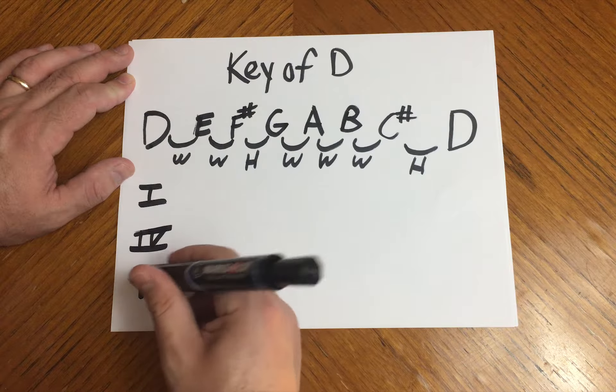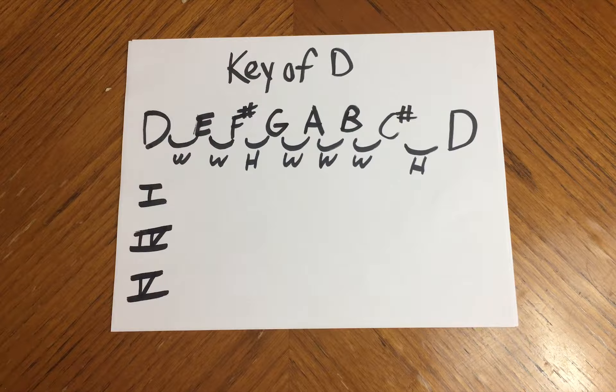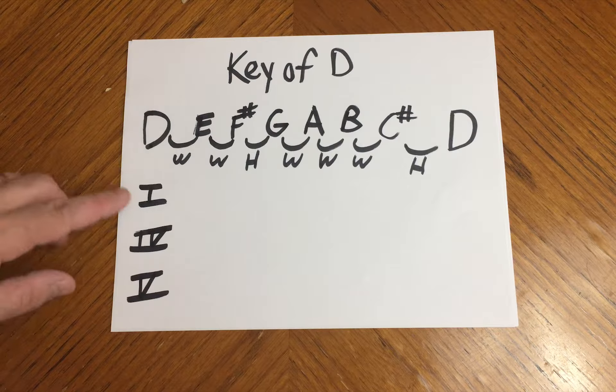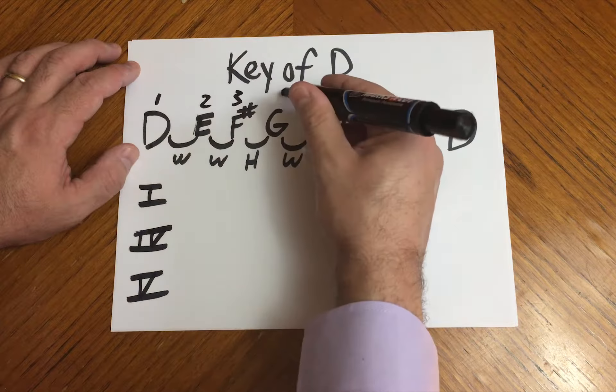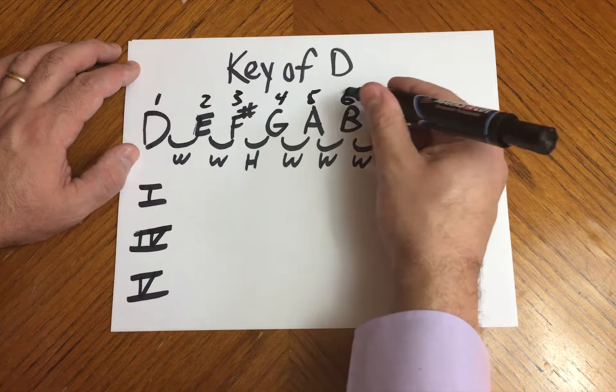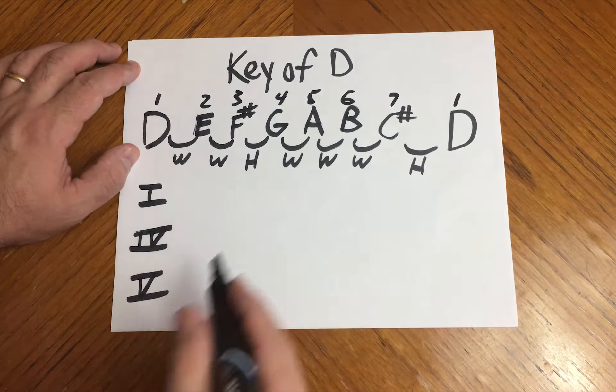We always know when we're harmonizing the major scale that the 1, the 4, and the 5 are major chords. The 1, the 4, and the 5 are always major chords.